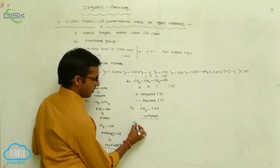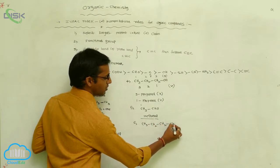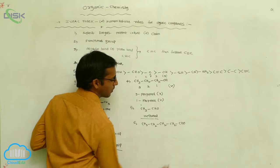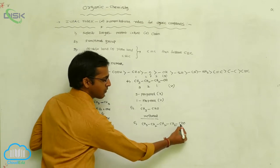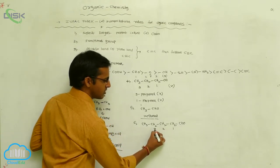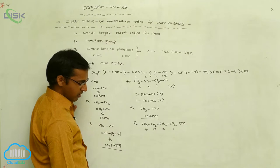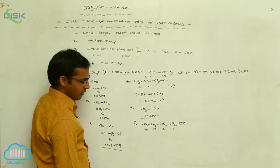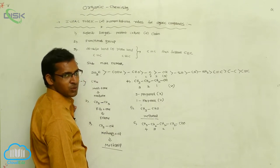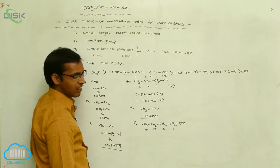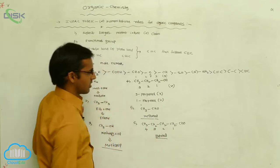Next example: consider CH₃CH₂CH₂CH₂CH₂CHO. First, select the longest chain according to the functional group. The functional group is at position 1, then 2, 3, 4 — total carbons are 4. Now, 4 carbons: the root word is 'but-'. Your aldehyde is the functional group, so the secondary suffix is '-al'. The name is butanal.